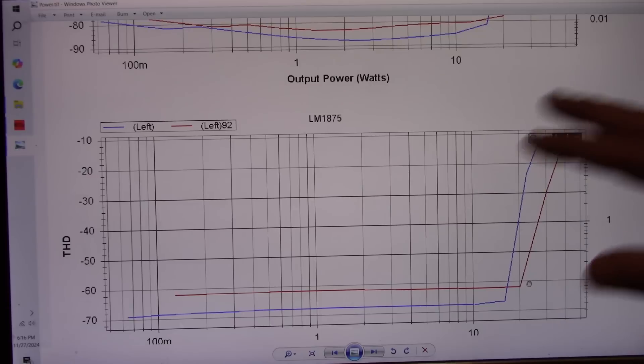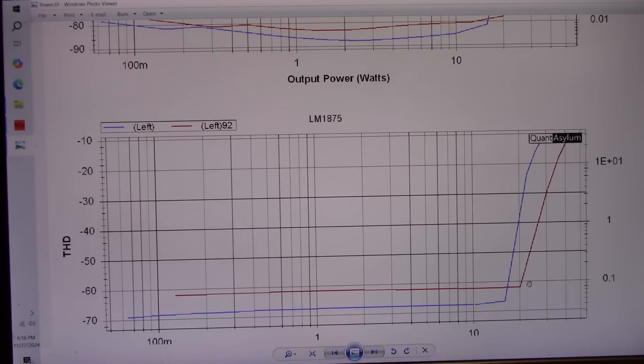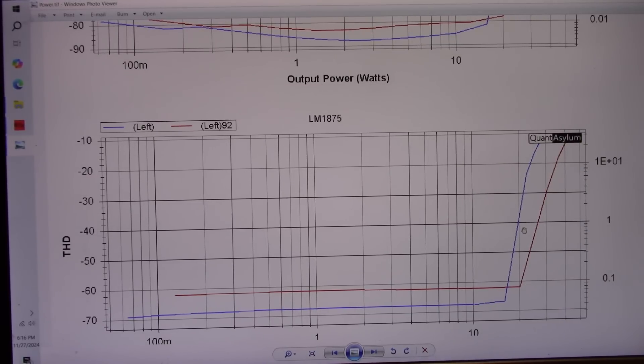I should mention these tests are done at a power supply voltage of plus and minus 20 volts. Now at the 1% level, 8 ohms, around 20 watts. I think the 2050 was 21 watts or so. And the 4 ohm is only 25, where it was 35 or 36 with the TDA chip.